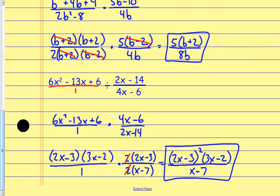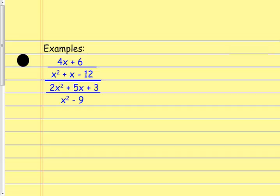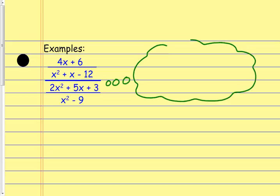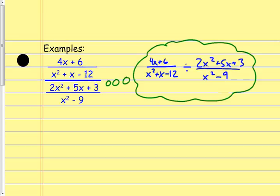If I look at this next one, it can look a bit daunting — but really what I have is a fraction over a fraction, in other words a fraction divided by another fraction. The top fraction is (4x+6) over (x²+x−12), and that's being divided by (2x²+5x+3). You can write your division horizontally first if you want. Now I change that to multiplying by the reciprocal: (4x+6) over (x²+x−12) times the reciprocal of the second fraction.